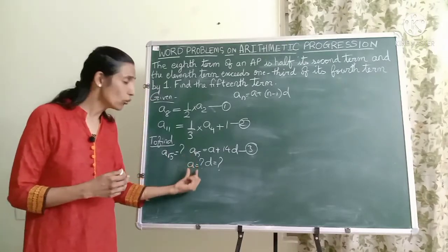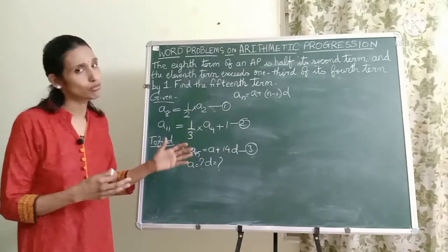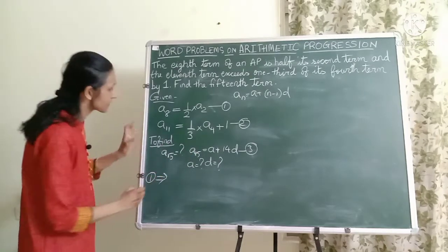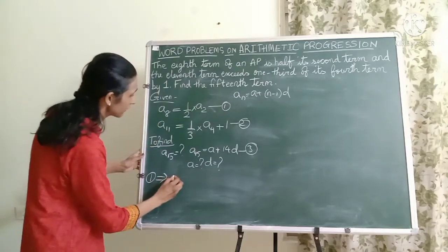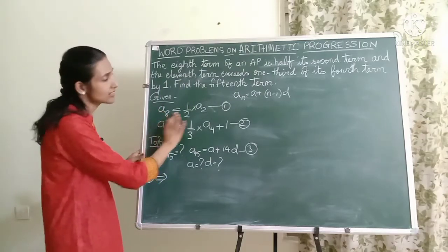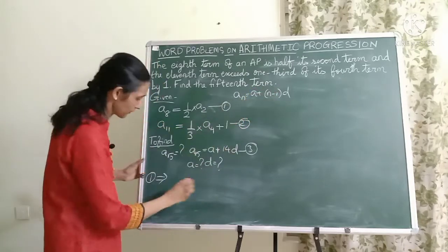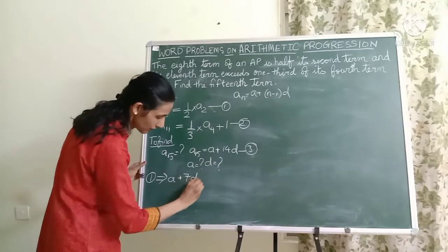Now friends, we have two unknowns and we have two equations. So definitely we can find out the value of A and D. So let's start with the first equation. It says A8. When I put N is equal to 8, I can say A8 is A plus 8 minus 1 times D, that is A plus 7D.